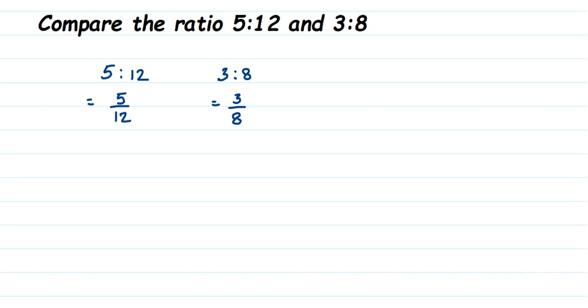Just cross multiply and you can get the answer directly. So here we have 5/12 and here we have 3/8. I'm gonna cross multiply - that means I'm gonna multiply this 8 with 5, and this 12 with 3. So 8 times 5 is 40, and 12 times 3 is 36.